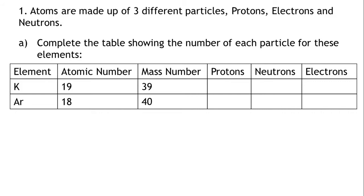Let's write down what we know. The atomic number is the number of protons in an atom. Therefore, the proton number for potassium, K, is 19, and the proton number for argon, Ar, is 18.